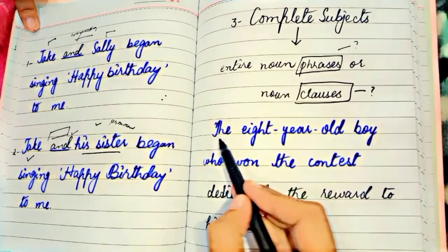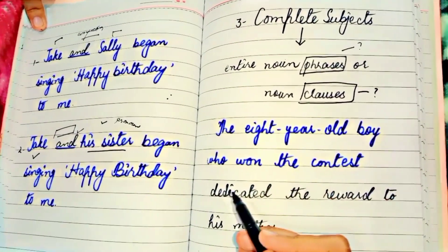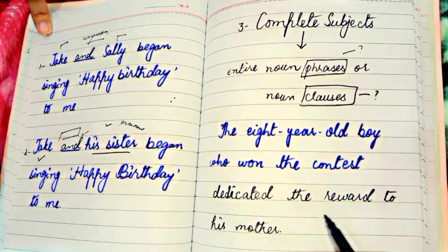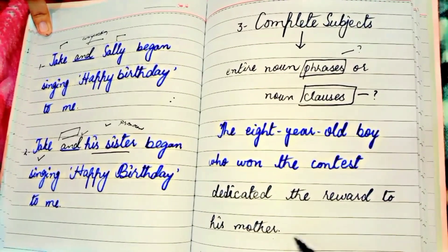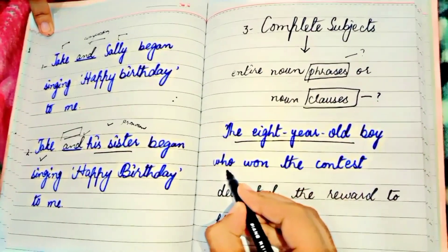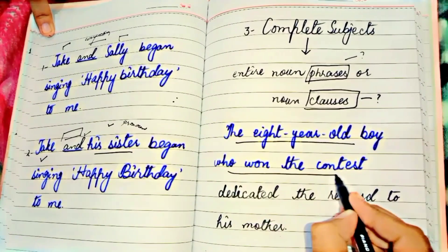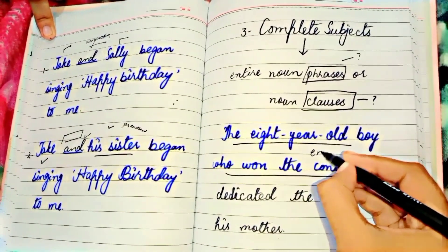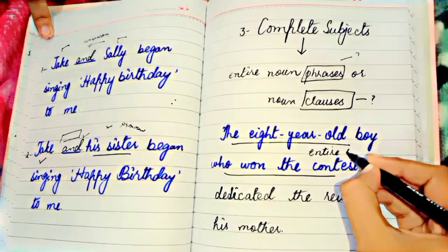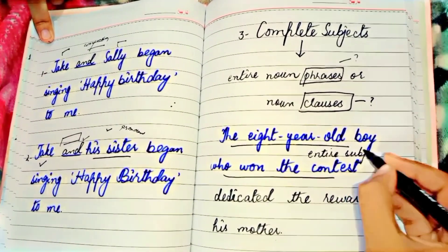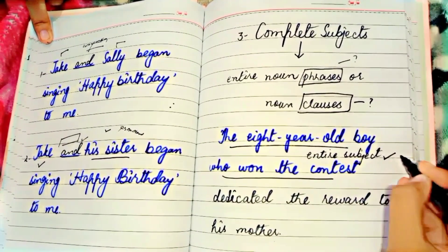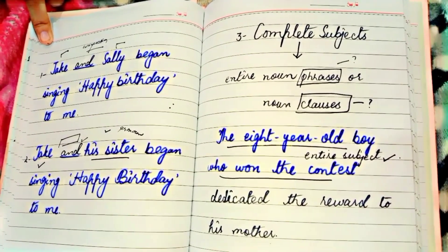'The eight-year-old boy who won the contest dedicated a reward to his mother.' In this sentence, 'the eight-year-old boy who won the contest' is the entire complete subject, and 'dedicated the reward to his mother' is the remaining sentence — the predicate.